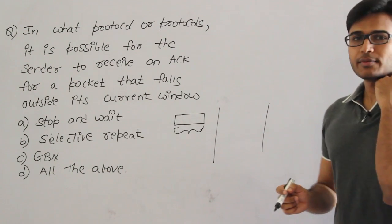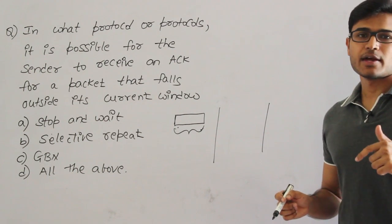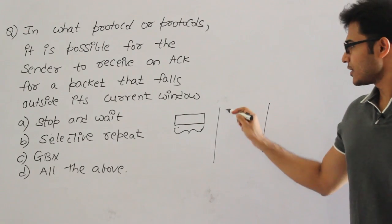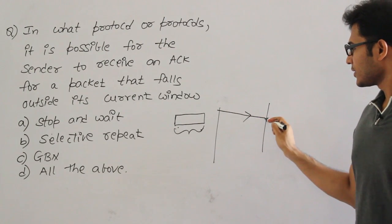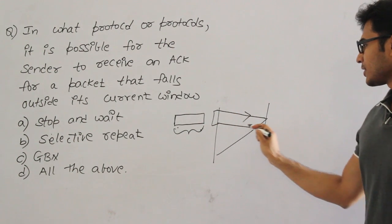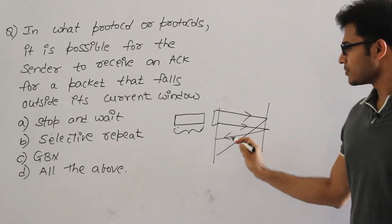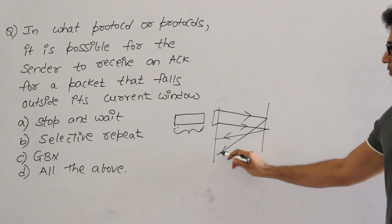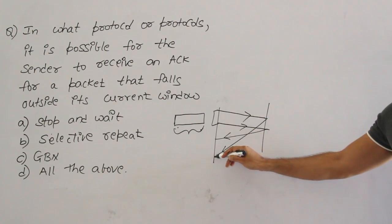But then suddenly what happens is sometimes an acknowledgement might be delayed, which means when you send one packet the acknowledgement might come very late. By that time you might have retransmitted that packet and you might have got the acknowledgement, and this late acknowledgement which is supposed to come earlier it will come now.